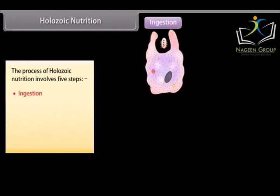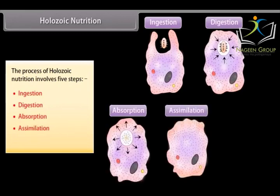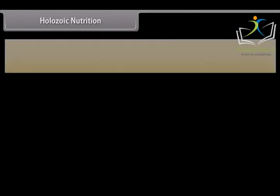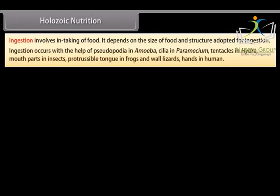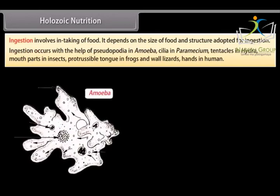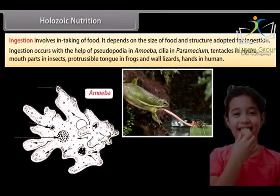The five steps are: Ingestion, Digestion, Absorption, Assimilation, and Egestion. Ingestion involves the intake of food and depends on the size of food and structure adopted for ingestion. It occurs with the help of pseudopodia in amoeba, cilia in paramecium, tentacles in hydra, mouthparts in insects, protrusible tongue in frogs and wall lizards, and hands in humans.